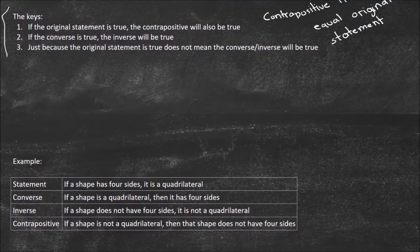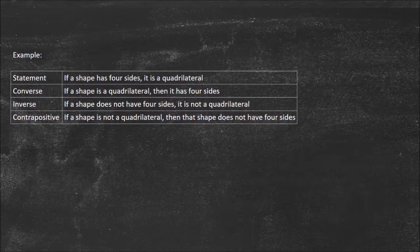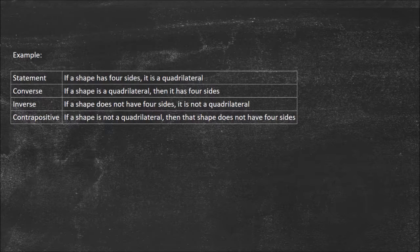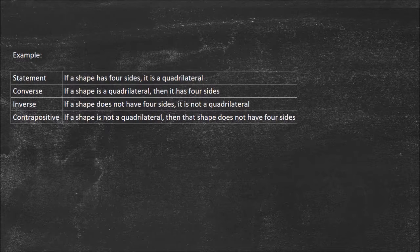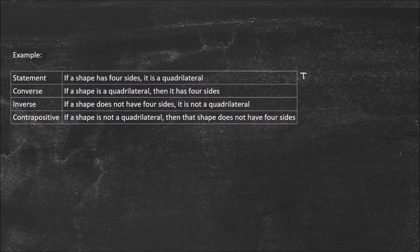Now let's look at how this is done with a real mathematical situation. Our statement is: if a shape has four sides, it is a quadrilateral. To answer these, you need to understand the geometry rules covered in the course and think critically about whether this is always, sometimes, or never true. If a shape has four sides, it is a quadrilateral — that's true, because that is the definition of a quadrilateral. So we know the contrapositive is true as well, since they share the same truth value.